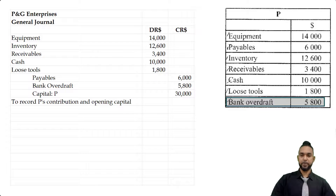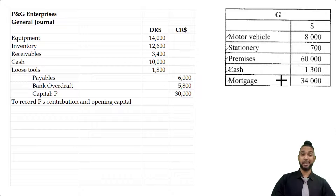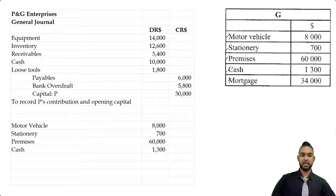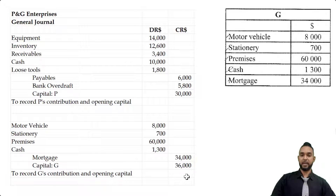Now let's take a look at G's table. We have assets again: motor vehicle, stationery, premises, cash, and one liability of mortgage. Just like we saw for P, we're going to add up all of the assets and subtract the one liability. So across here we're seeing motor vehicle, stationery, premises, cash, and mortgage. We're going to add up these items and subtract the 34,000, and that's going to give us 36,000 capital for G. We need a narration to briefly describe what's happening — so it says to record G's contribution and opening capital.